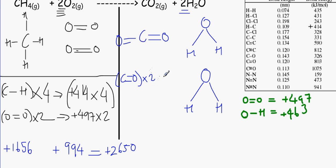is C to double bond O, 803. And we need to multiply that by 2. The O to H, we need to multiply that by 1, 2, 3, 4.